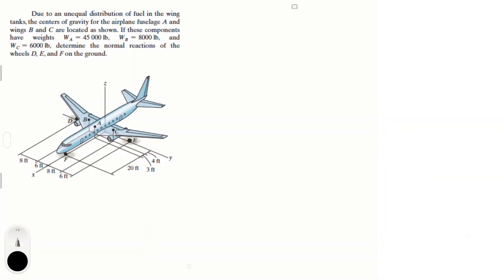Alright guys, this is a problem that says that due to an unequal distribution of fuel in the wing tanks, the center of gravity of the airplane fuselage A and wings B and C are located as shown. If these components have weights WA, WB, and WC, determine the normal reactions at the wheels D, E, and F.